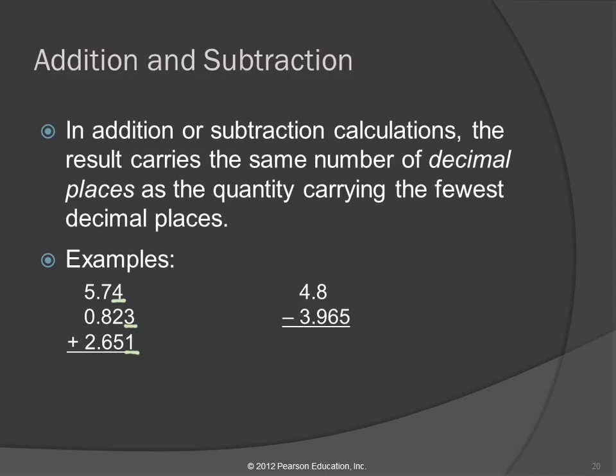So let's think about adding these numbers. The best thing is to actually do it on your calculator first. 5.74 plus 0.823 plus 2.651. We could do this the old-fashioned way, but we have a calculator. So the calculator says 9.214.